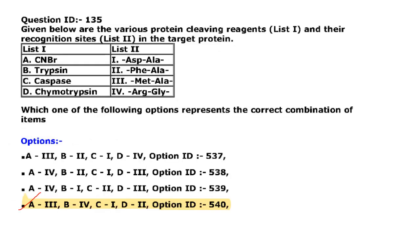Next question: given below are various protein cleaving reagents and their recognition sites in the target protein. CNBr (cyanogen bromide) cleaves on the carboxyl side of methionine — that's A3. Trypsin cleaves on the carboxyl side of arginine or lysine — B4. Caspase cleaves at aspartic acid-alanine. Chymotrypsin cleaves at phenylalanine because it cleaves aromatic amino acids. The correct answer is option 4.